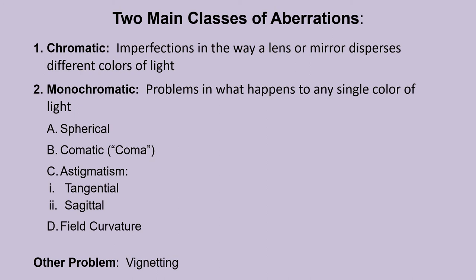Aberrations come in two main classes: chromatic and monochromatic. Chromatic aberrations arise from imperfections in the way a lens or mirror disperses different colors of light. Monochromatic aberrations arise from problems in what happens to any single color of light, and include spherical aberration, coma, astigmatism — of which there are two types, tangential and sagittal — and field curvature. Vignetting is another problem that comes up, and diffraction can be a problem too, as we saw earlier.